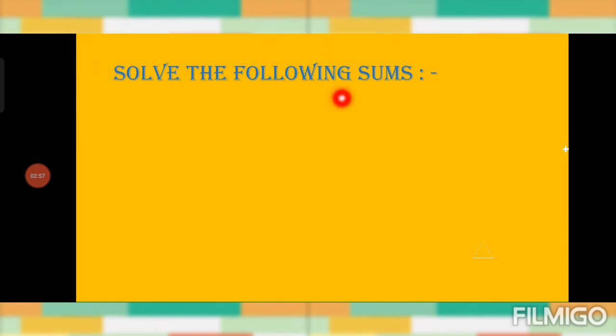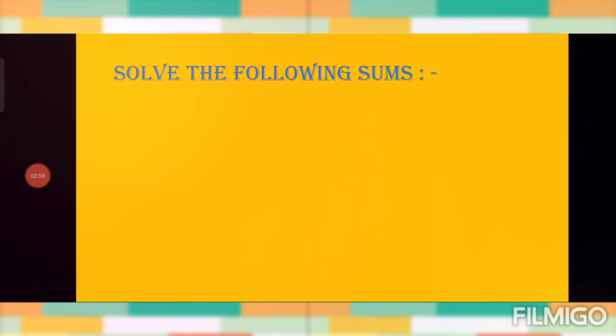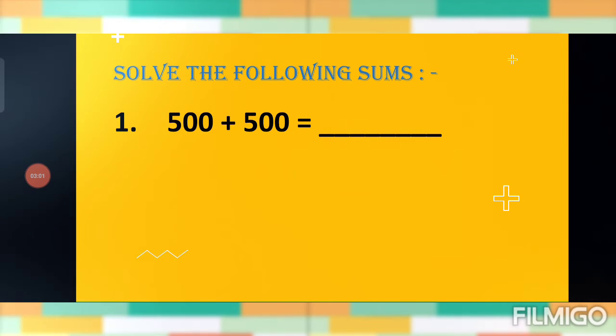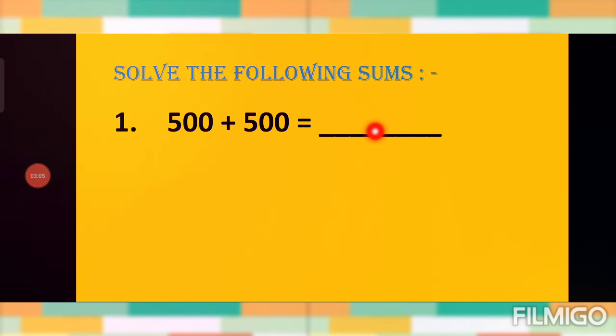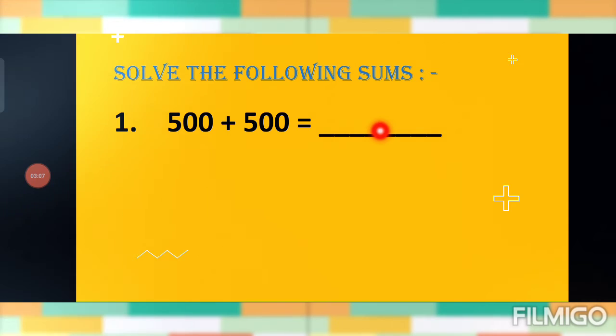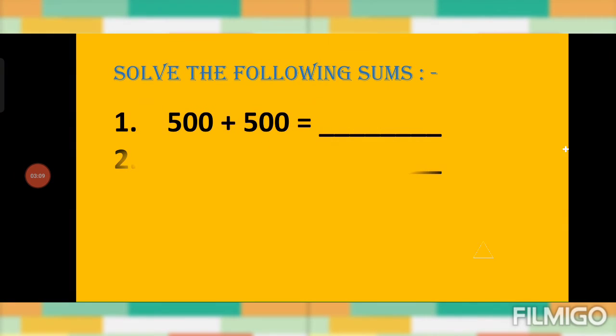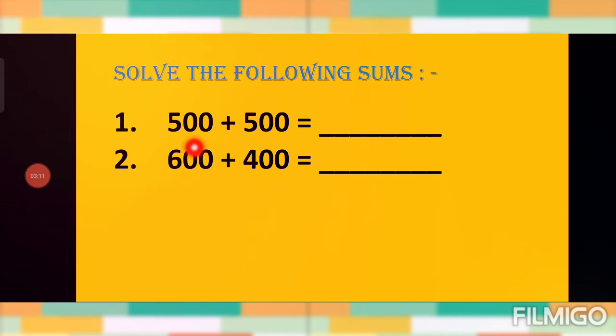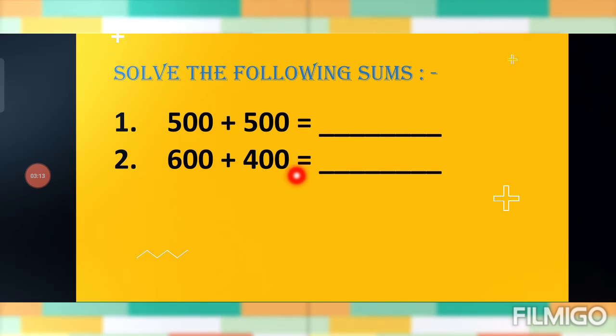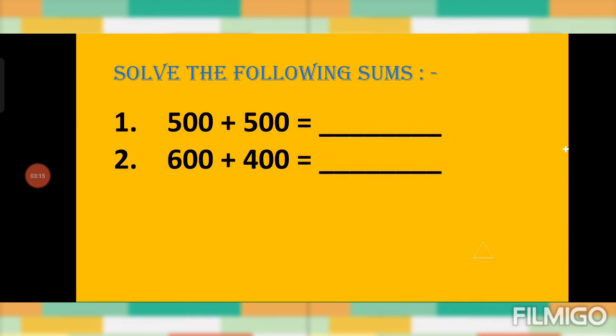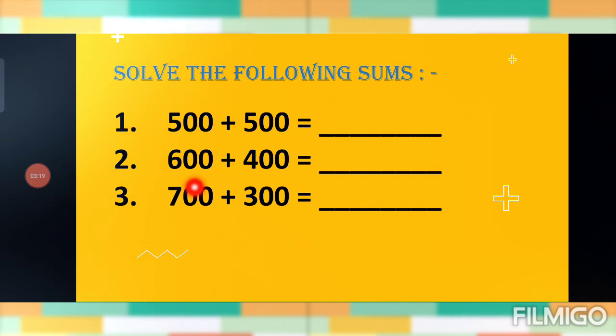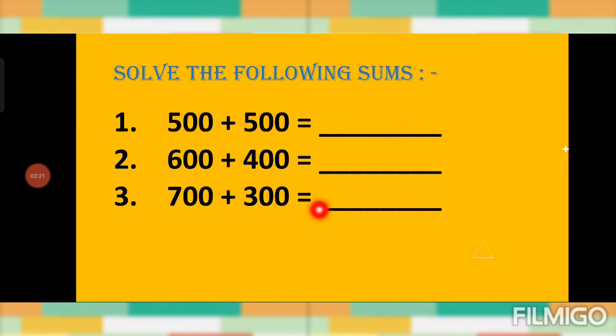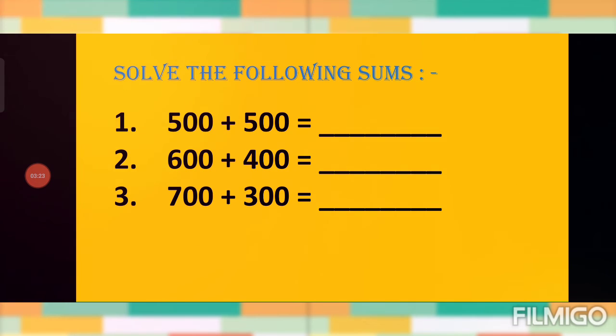Solve the following sums. 500 plus 500 equals? Yes, 1000. 600 plus 400 equals? What is the answer? 1000. 700 plus 300 equals 1000.